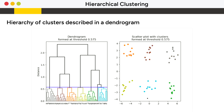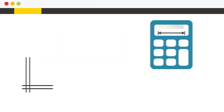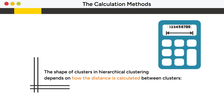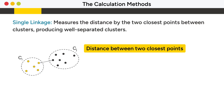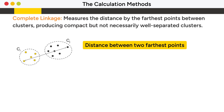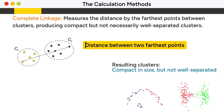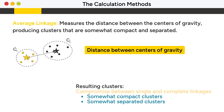To obtain a specific number of clusters, apply a cutoff threshold at a particular distance on the dendrogram. The shape of clusters in hierarchical clustering depends on how the distance is calculated between clusters. Single linkage measures the distance by the two closest points between clusters, producing well-separated clusters. Complete linkage measures the distance by the farthest points between clusters, producing compact but not necessarily well-separated clusters. Average linkage measures the distance between the centers of gravity, producing clusters that are somewhat compact and separated.